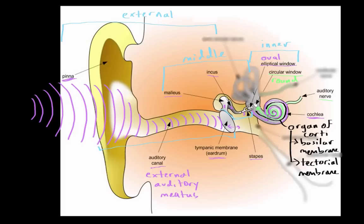Next, we'll look at the cochlea more carefully, examining how fluid motion inside the cochlea causes hair cells to fire a neural impulse to the brain, which can then be interpreted as sound.